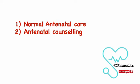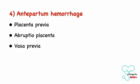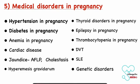For proper antenatal counseling you should be thorough with normal maternal adaptations in pregnancy. The third one is early pregnancy bleeding and related topics like miscarriage, ectopic, and hydatidiform mole. The fourth one is antepartum hemorrhage, which includes placenta previa, abruptio placenta, and vasa previa. The fifth one is medical disorders in pregnancy — hypertension and diabetes in pregnancy are the important topics, so you should focus on these and follow the updated Australian guidelines for their management. Other topics include anemia in pregnancy, cardiac disorders, jaundice, hyperemesis, thyroid disorders, epilepsy, thrombocytopenia, DVT, SLE, and genetic disorders.